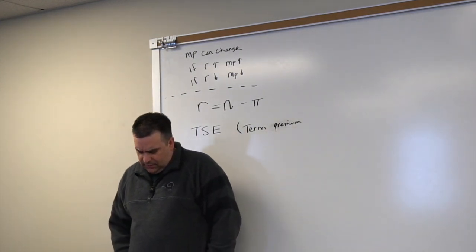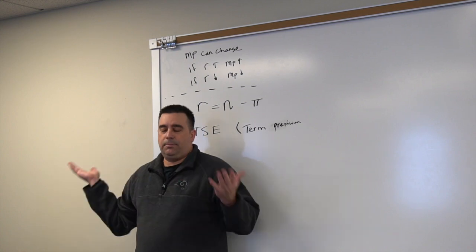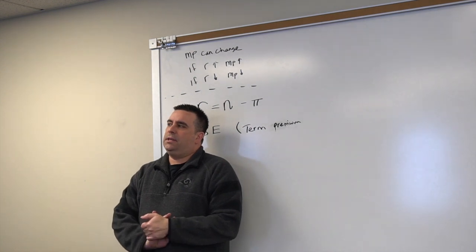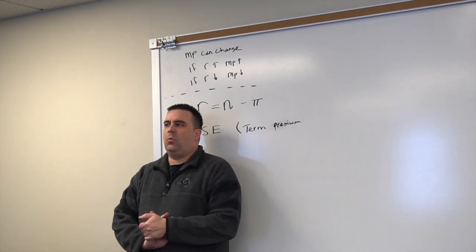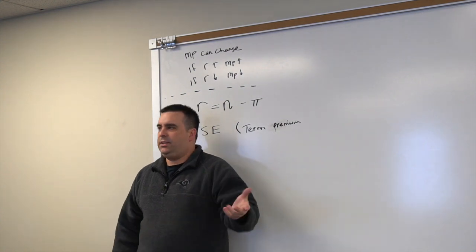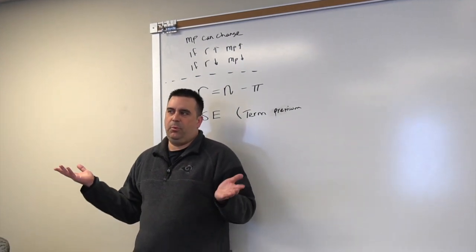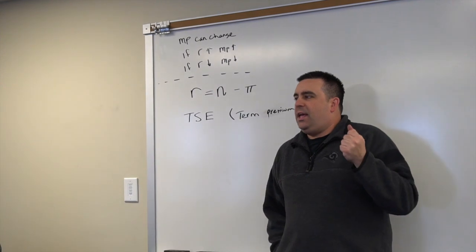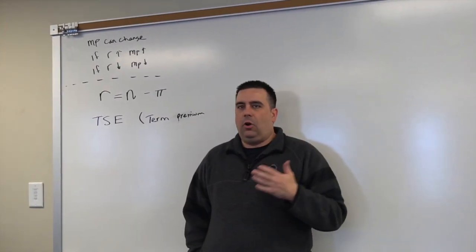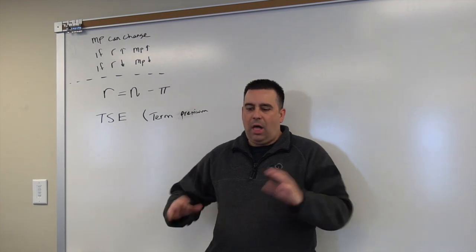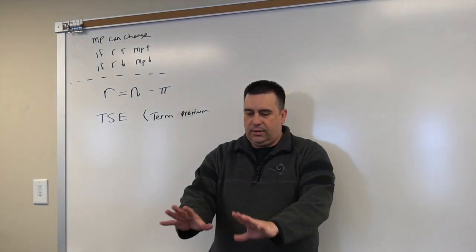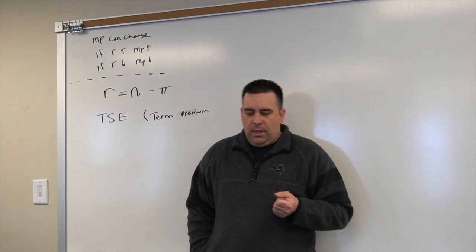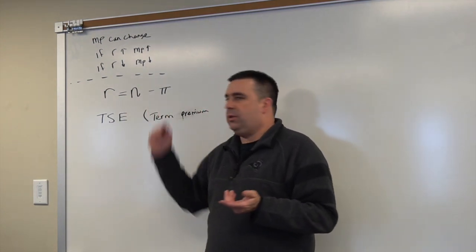So we actually talked about this very briefly when I looked up the bond prices. I think the 10-year bond was at 1.1 and the 30-year one was at 1.7 or something like that. The idea is that people don't like not having access to their money for a long time. If I'm going to lock my money into something long-term where I can't get cash, you need to make it worth my while.